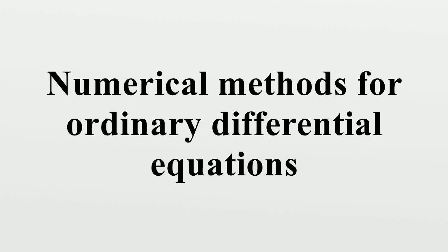The method is named after Leonhard Euler who described it in 1768. The Euler method is an example of an explicit method. This means that the new value Yn+1 is defined in terms of things that are already known, like Yn.